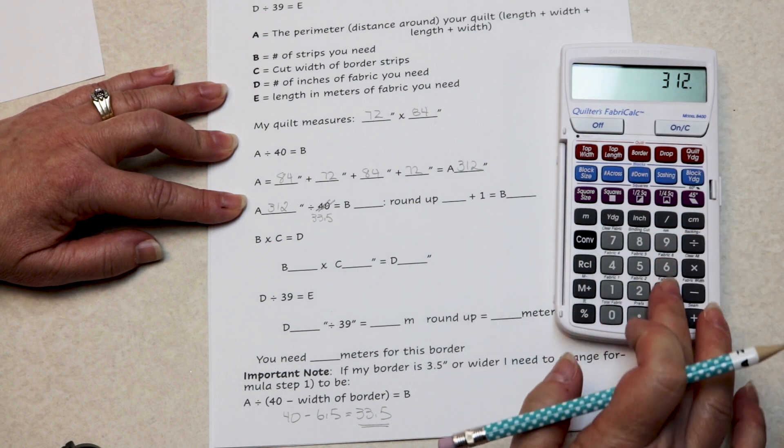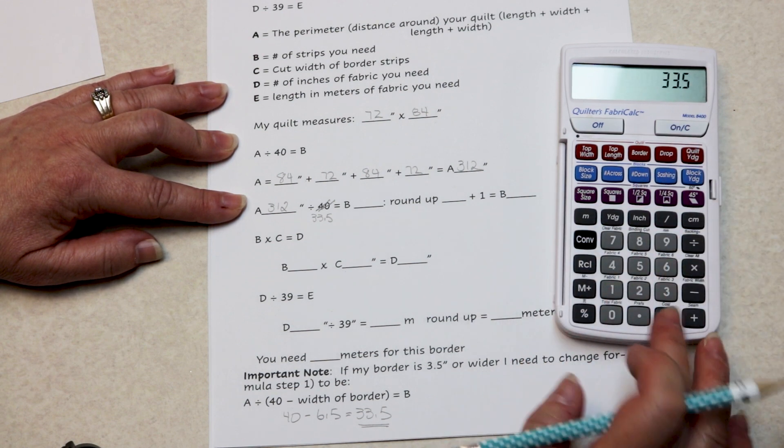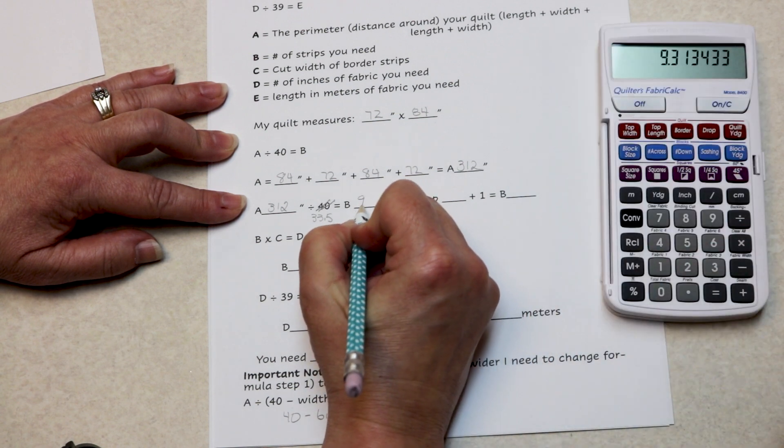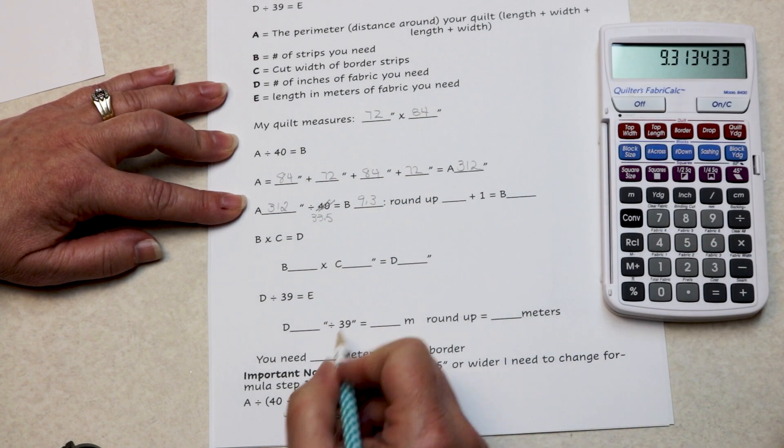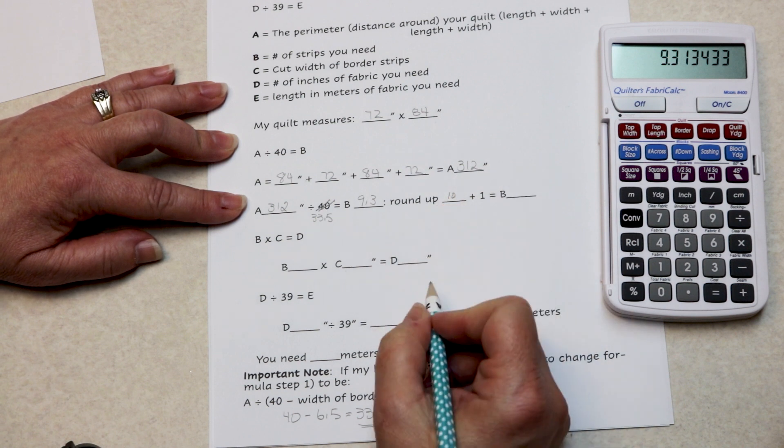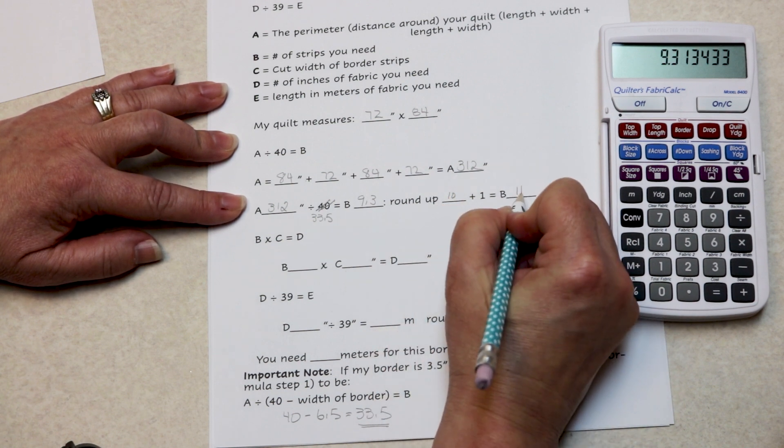312 divided by 33.5 tells me how many strips I need: 9.3. Round up is 10, and add one. I need 11 strips.